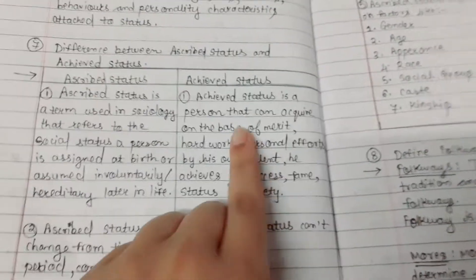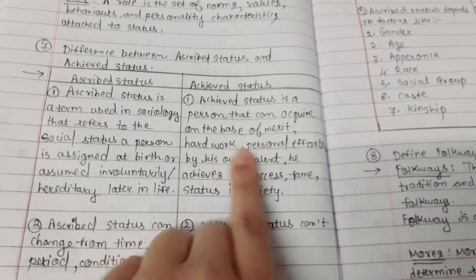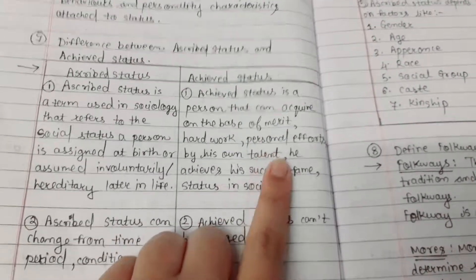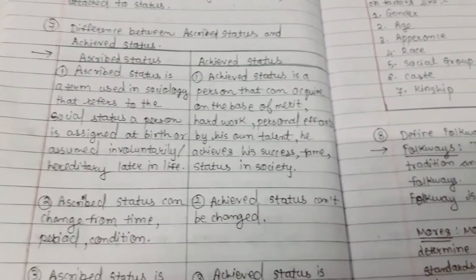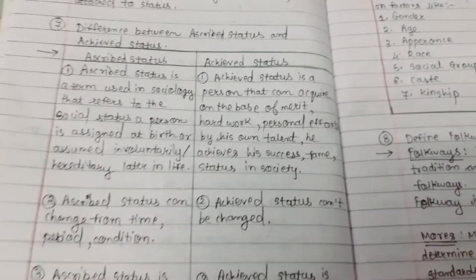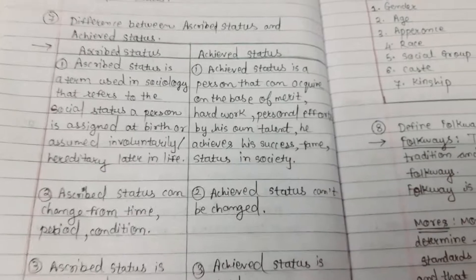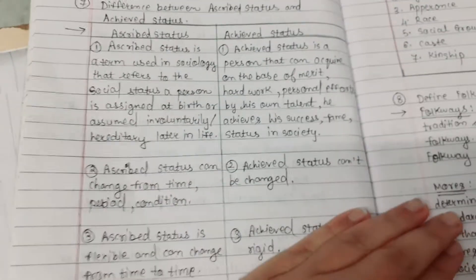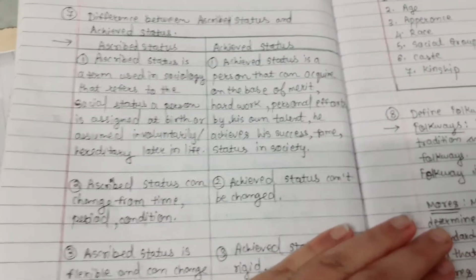Achieved Status is a status that a person can acquire on the basis of merit, hard work, and personal efforts. By his own talent, he achieves success, fame, and status in society.